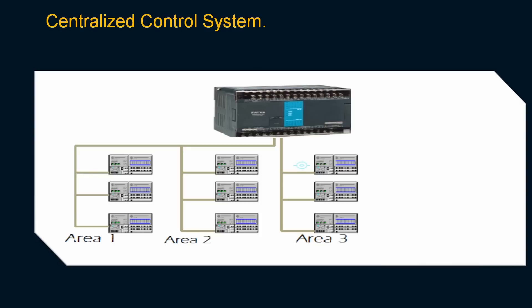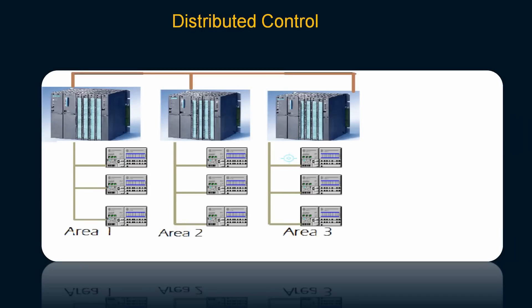To sort out that problem, we have another solution — what we call a distributed control system. In a distributed control system, we put different controllers and assign each controller to each area. Now, for example, if area 1's PLC goes down due to a CPU error or communication errors, areas 2 and 3 are still working. You have distributed your task into three different controllers, and if area 1's controller goes down, it will not affect other areas. This is the beauty of distributed control systems.